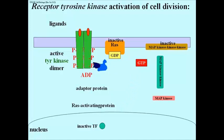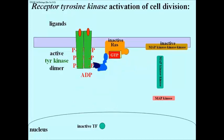And then a protein called the RAS activating protein. A GDP-bound inactive membrane protein called RAS associates with the RAS activating protein, resulting in GTP displacing the GDP on the RAS protein. The RAS protein is now itself active.